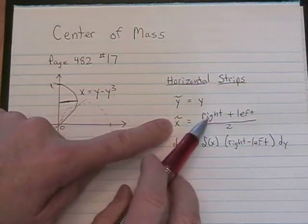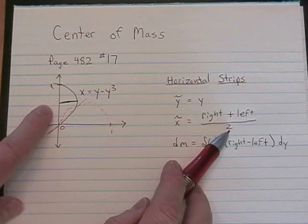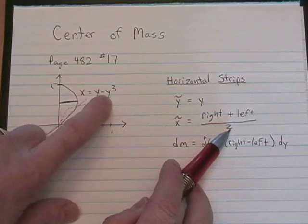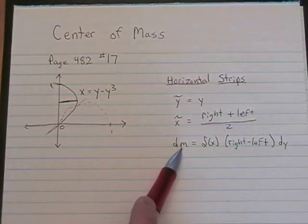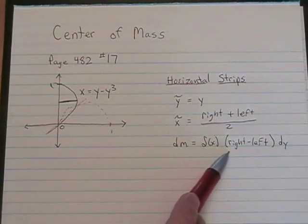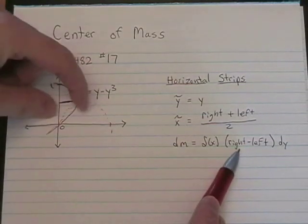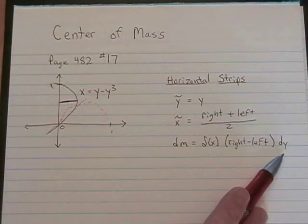The tilde x is going to be the right-hand boundary plus the left-hand boundary divided by 2. In our case, y minus y cubed plus 0 divided by 2. The dm is your density function times the length of a strip, and the way you get the length of a strip is the right minus the left, times dy.